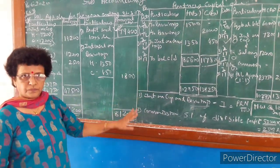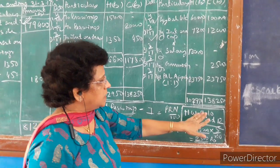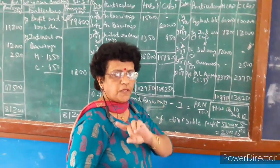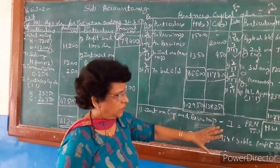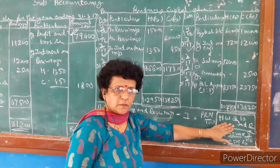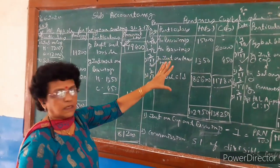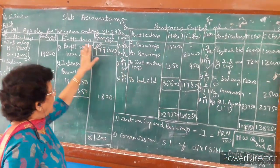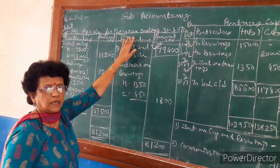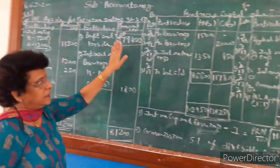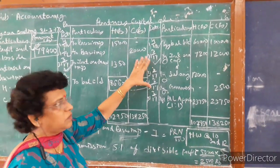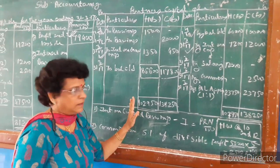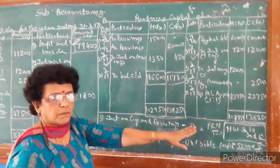Today's homework is question number 10 and question number 12 to be done. Question 9 is as per the fixed capital method, which we will be doing tomorrow. Keep in mind your basic rules of accounting — appropriation account is governed by the rule of nominal account: debit all expenses, credit all income. The capital account is a personal account governed by the rule of the person: debit the receiver, credit the giver. Do the homework and complete your task. Thank you.